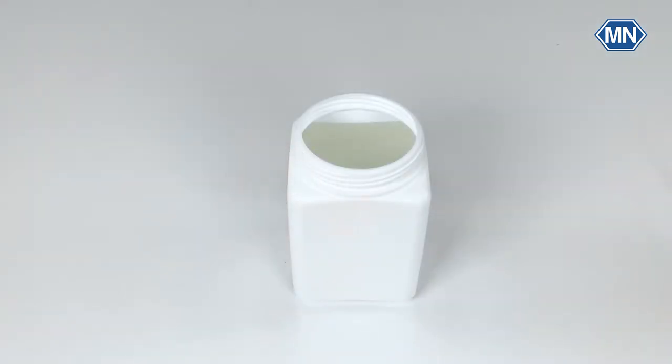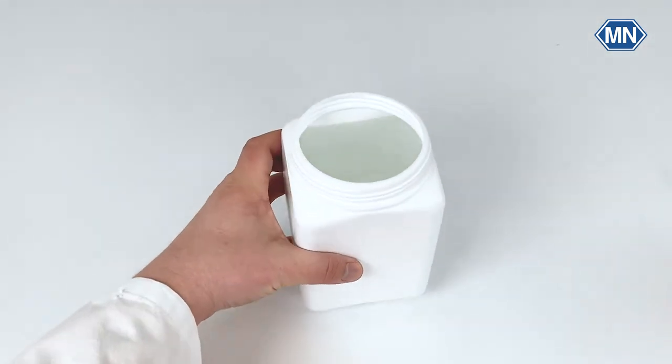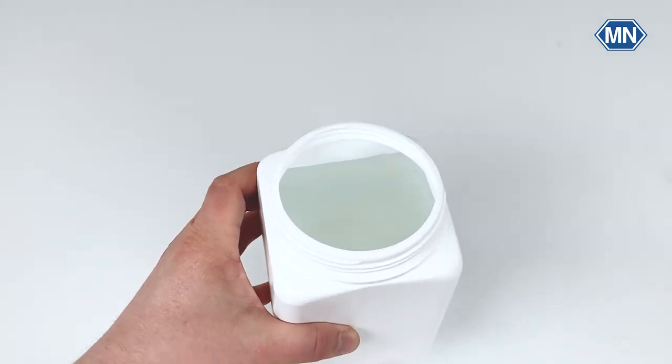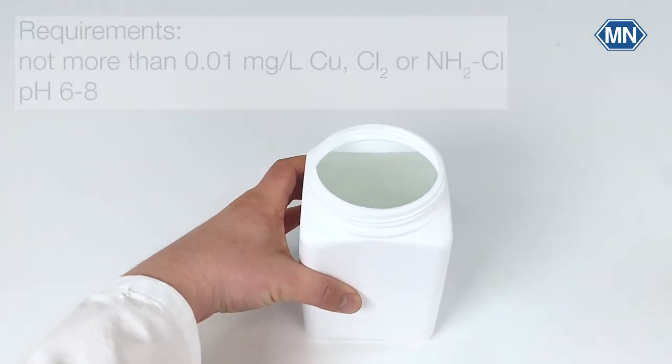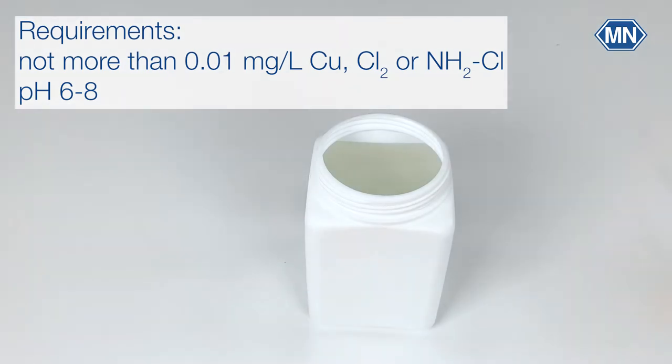Fill the storage vessel with water. For this you need unchlorinated tap water. The water must not contain more than 0.0 mg per liter copper, chlorine or chloramine. The pH value should be between 6 and 8. If necessary adjust the pH with sulfuric acid or sodium hydroxide solution.